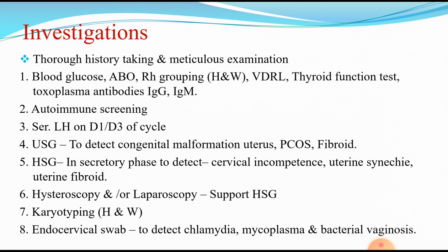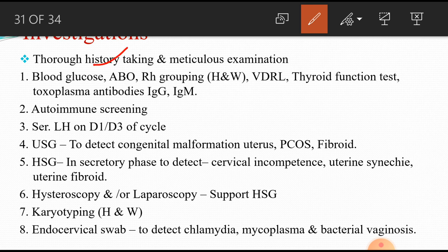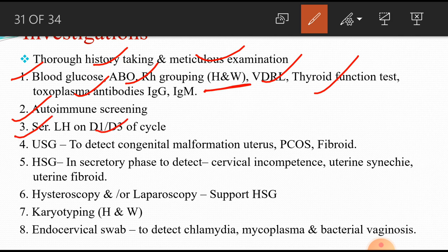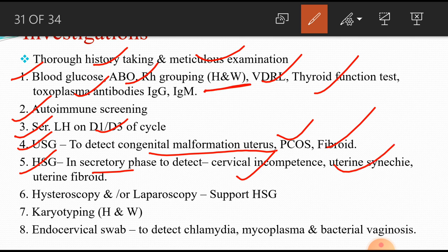Investigation for recurrent miscarriage: take a thorough history and meticulous examination. Blood glucose, ABO/Rh grouping for husband and wife, VDRL, thyroid function test, toxoplasma antibody IgG/IgM, autoimmune screening, serum LH on day 1 to day 3 of cycle. Also hysterosalpingography (HSG), karyotyping of husband and wife, and endocervical swab to check for mycoplasma or bacterial vaginosis.